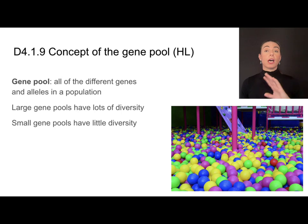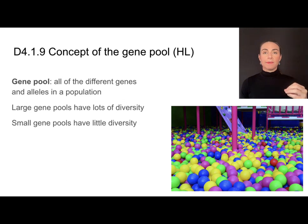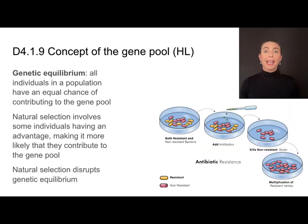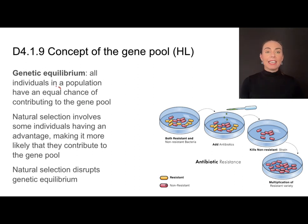Large gene pools have a lot of diversity, whereas a small gene pool means little diversity. It's important to note that you can have a big population with a small gene pool if their genes do not show a lot of diversity. When gene pools remain unchanged, they are at what we call genetic equilibrium — look at those root words — an equal chance of contributing to the gene pool.